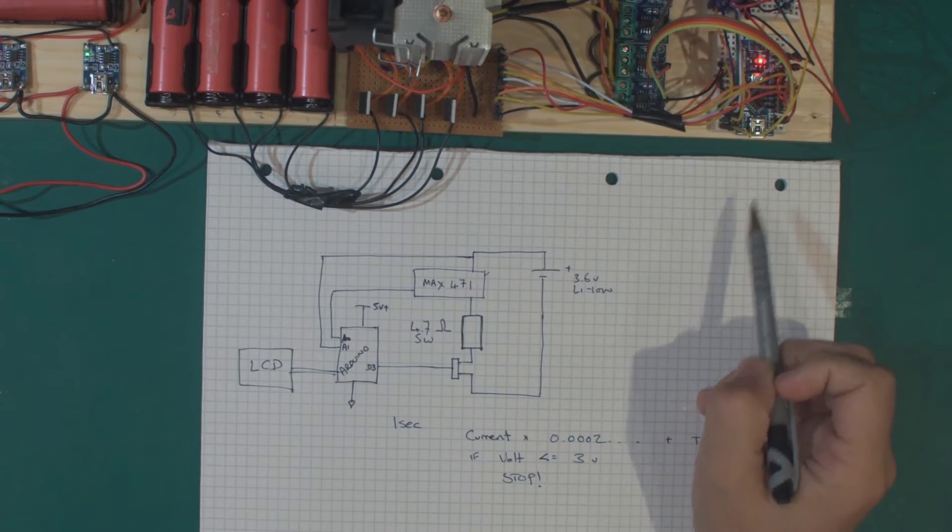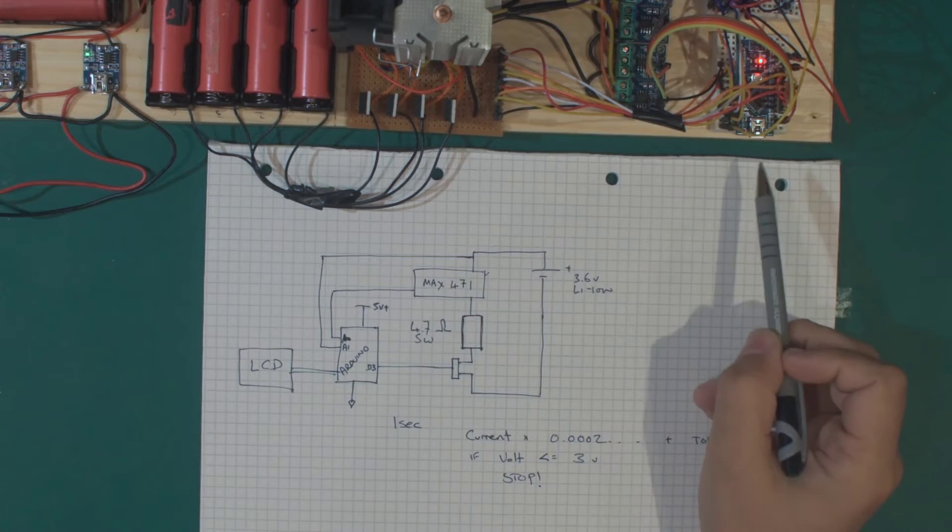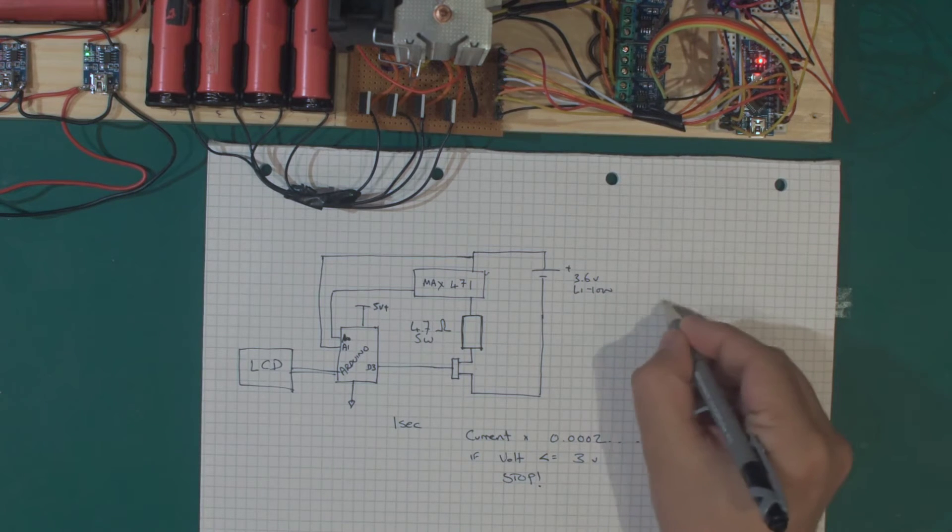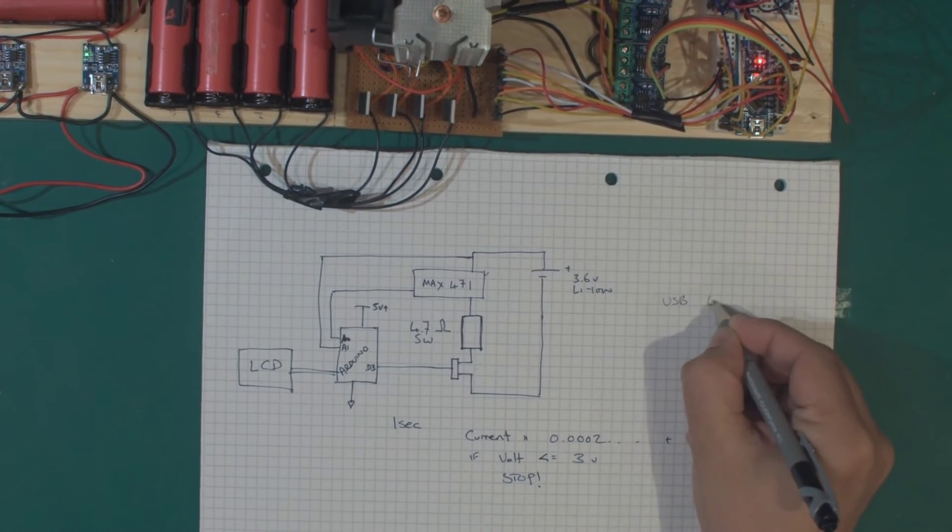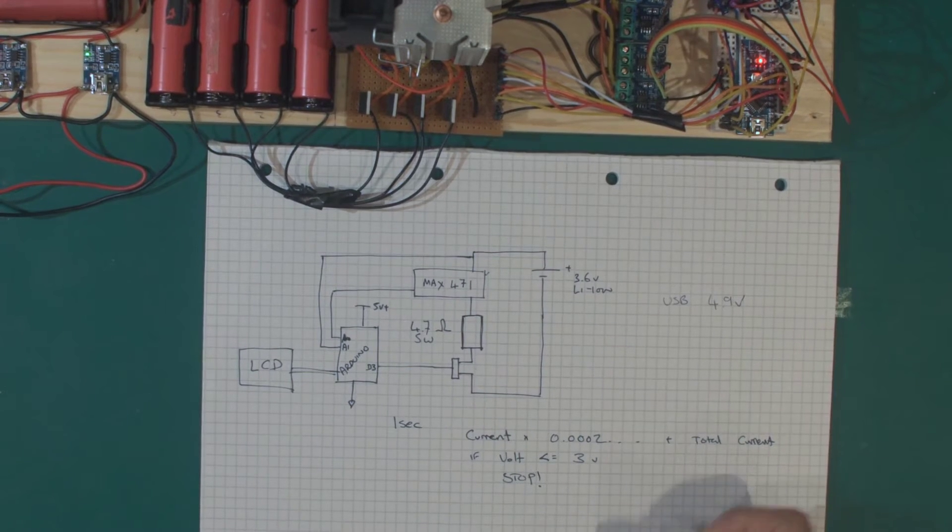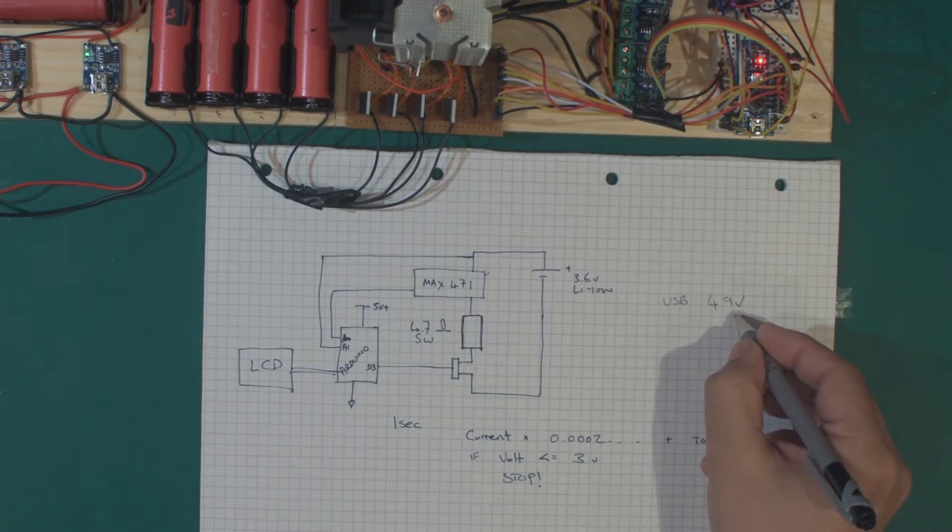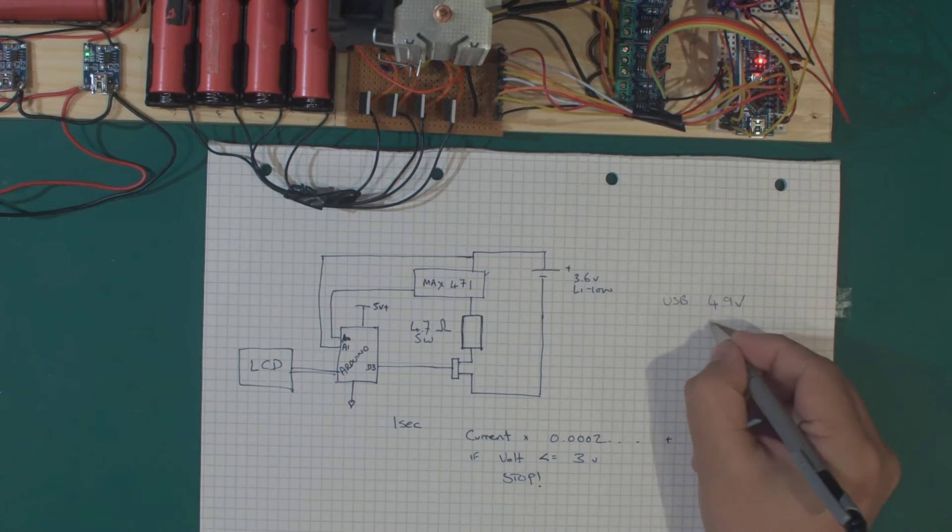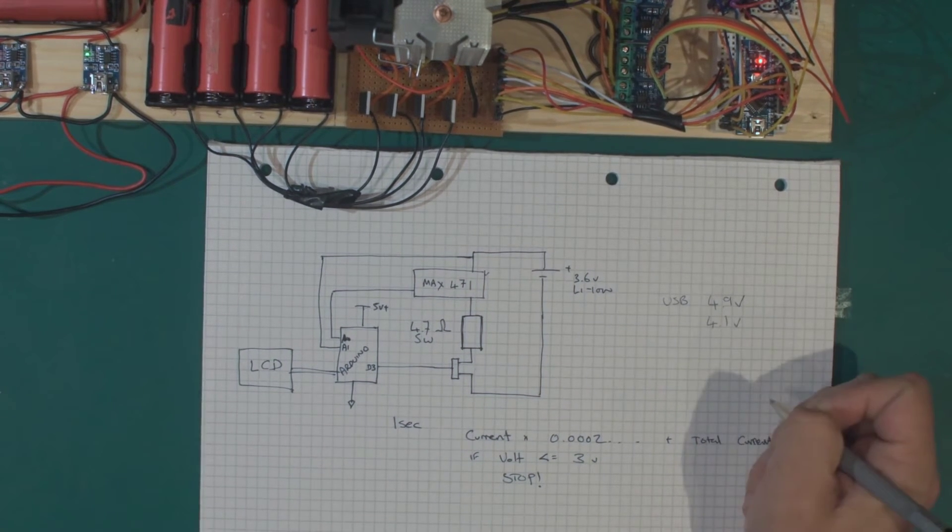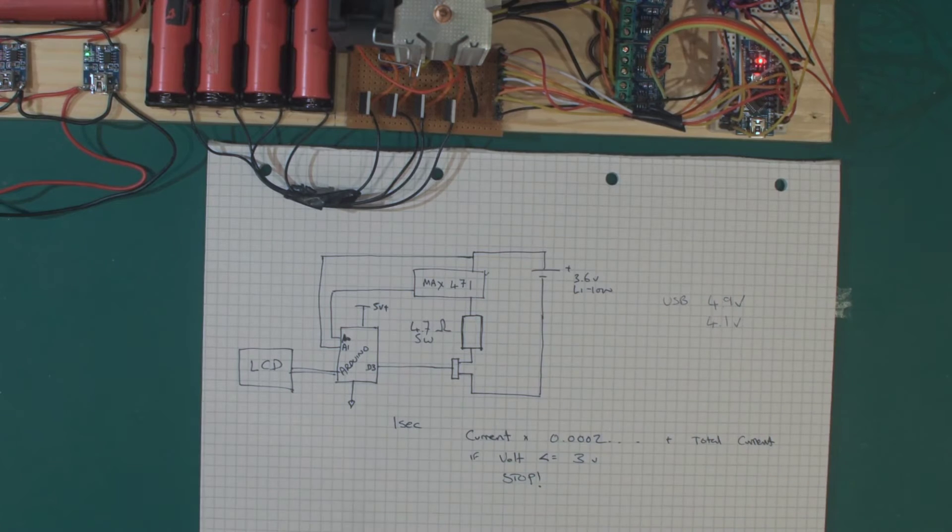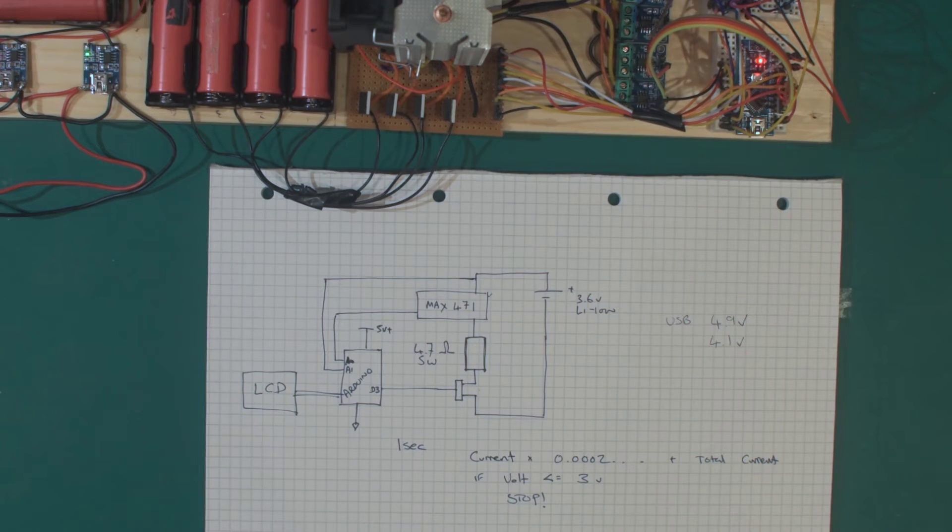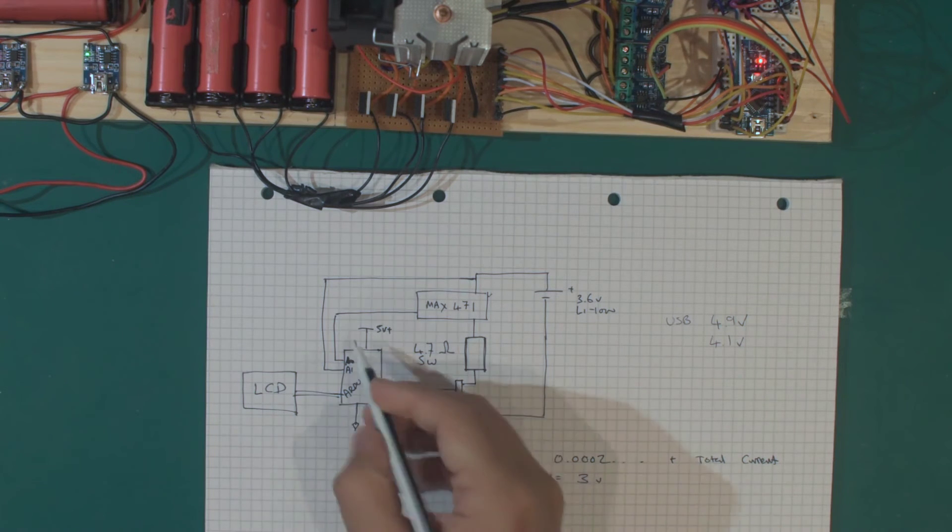It has a five volt regulator on board which the USB is fed through. Because it was already supplying USB, it was bringing 4.9 volts in. When it went through the voltage regulator that's on this board, it was bringing it down to 4.1 volts.